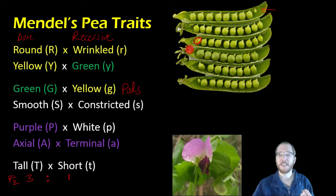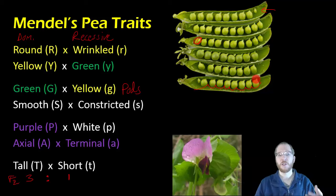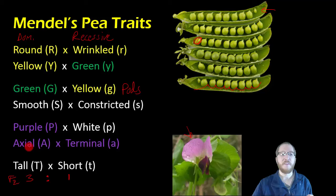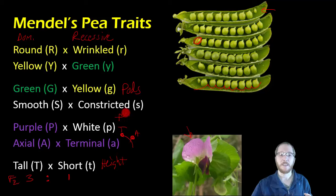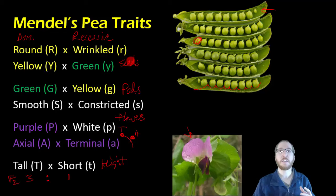There is a constricted pod version where the casing seems to wrap around the peas, showing bumps and ridges — that constricted form is recessive. For flowers, purple is dominant over white, as we've already discussed. We also have flower location: axial — further in on the stem — is dominant, while terminal, meaning at the tips, is recessive. Finally, for plant height, tall is dominant and short is recessive. Those are the seven characteristics Mendel studied and which version of each was dominant or recessive.